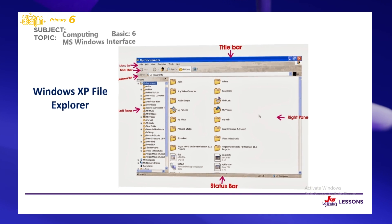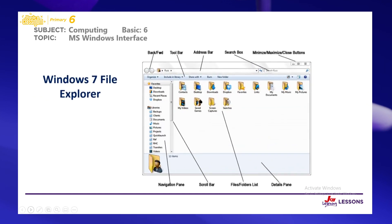Let's look at the File Explorer for Windows 7. If you are using Windows 7 and you launch your File Explorer, this is what you are going to see. We have the back and forward buttons, the toolbar, the address bar, and the search box. We have the minimize, maximize, and close buttons, the navigation pane, the scroll bar, the files or folder list, and the details pane.